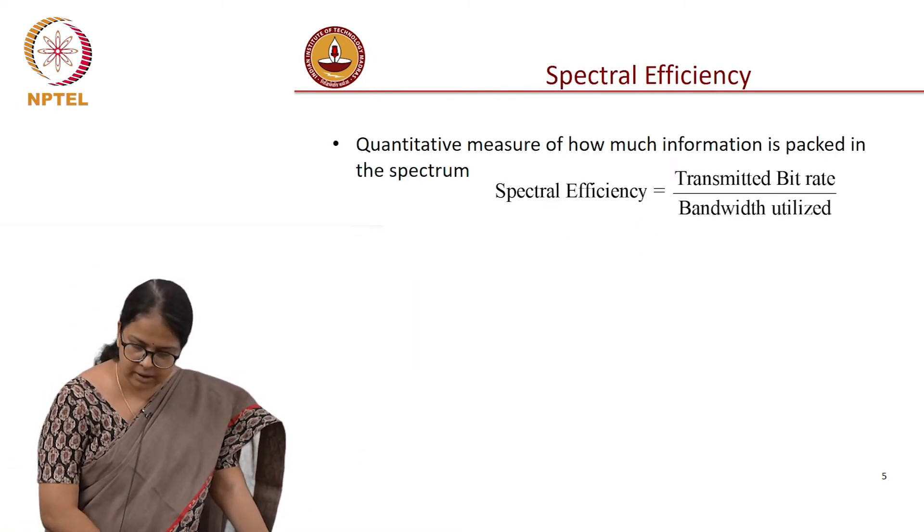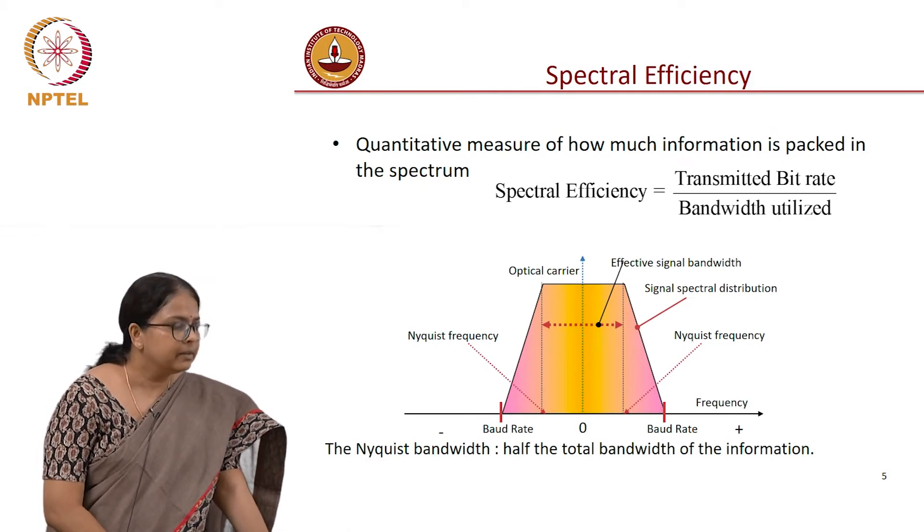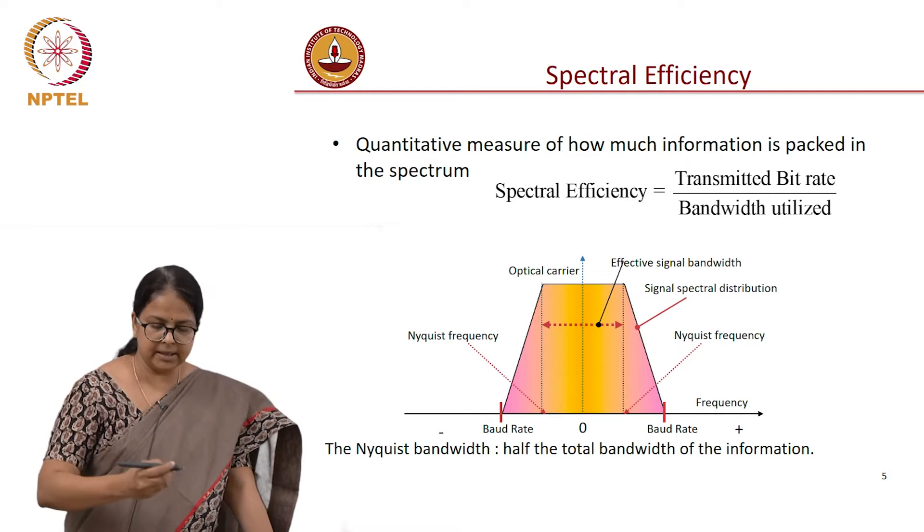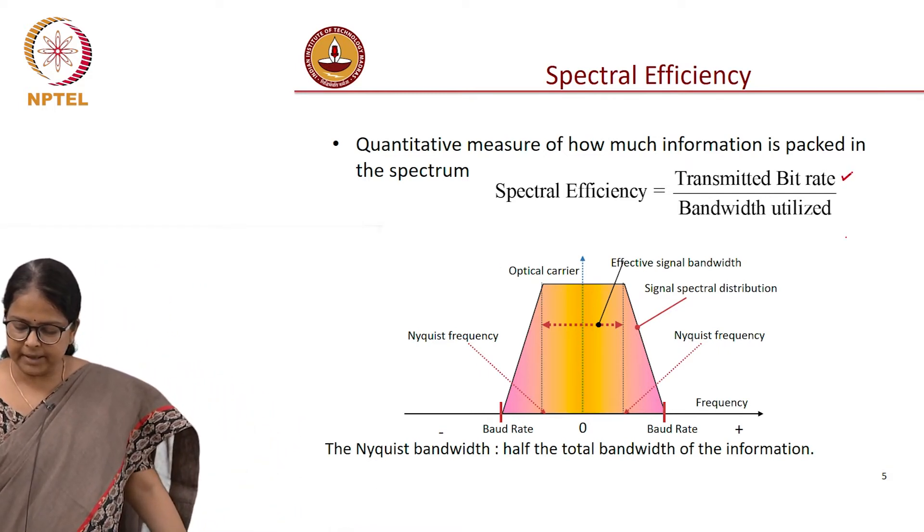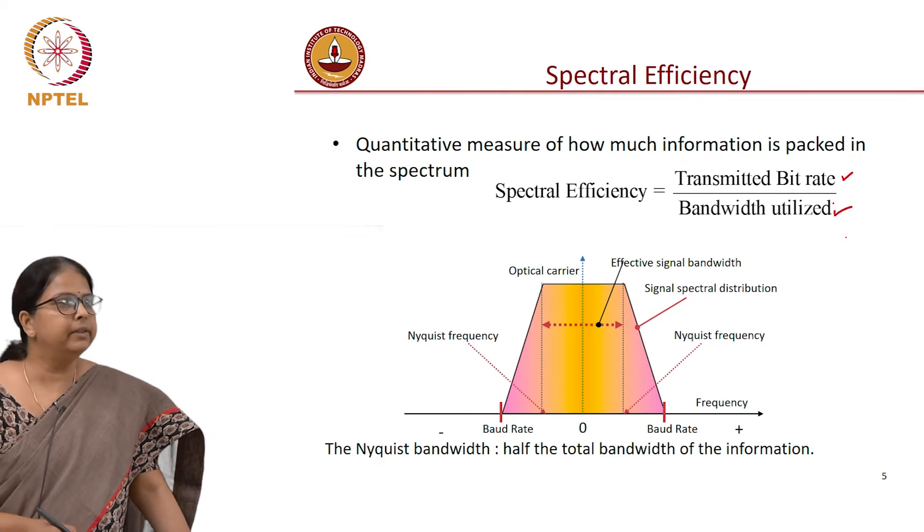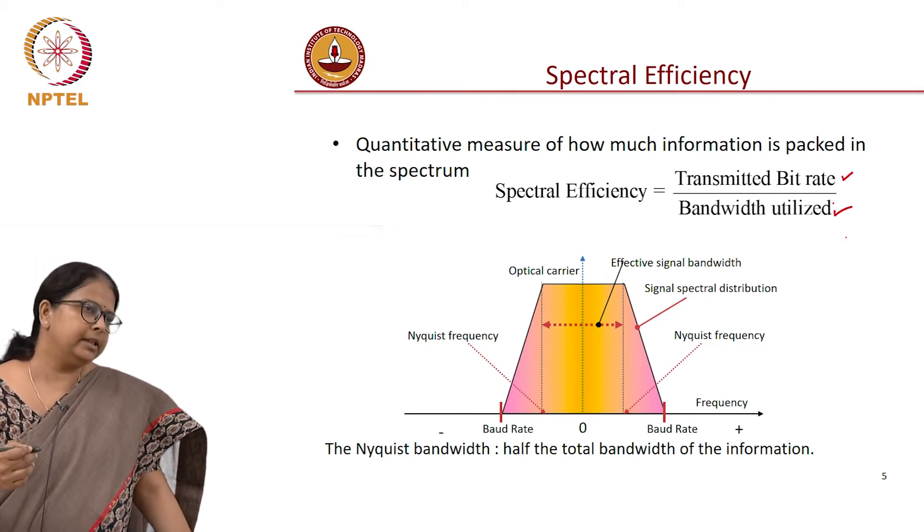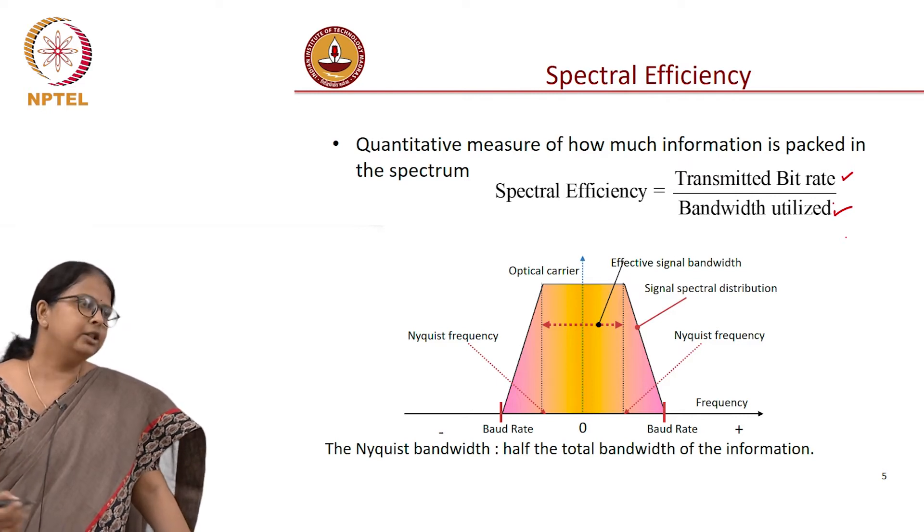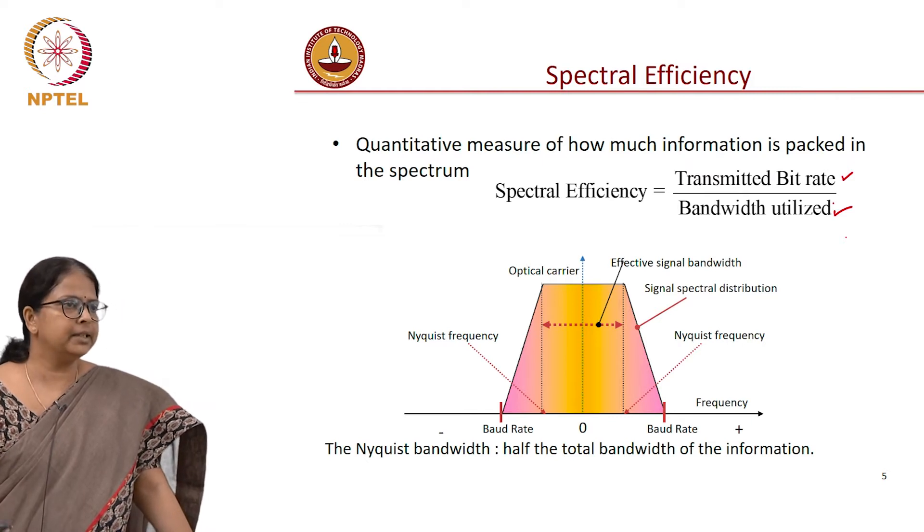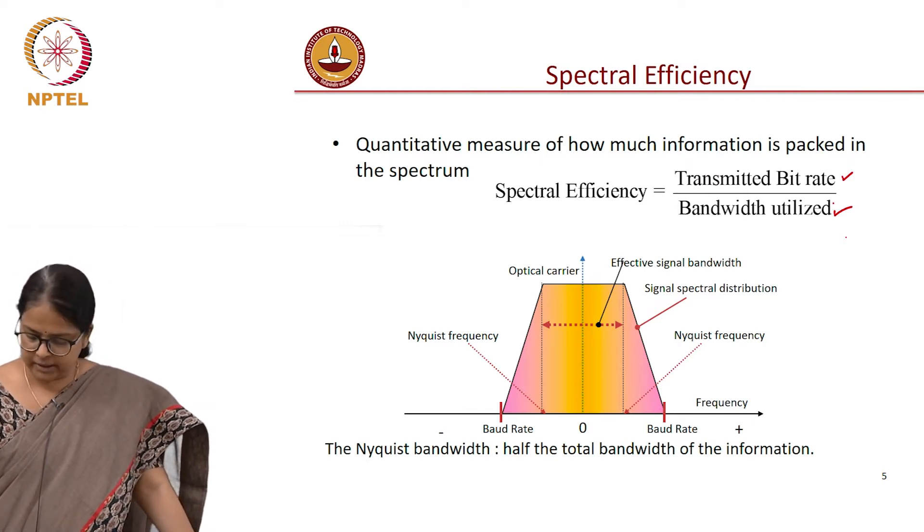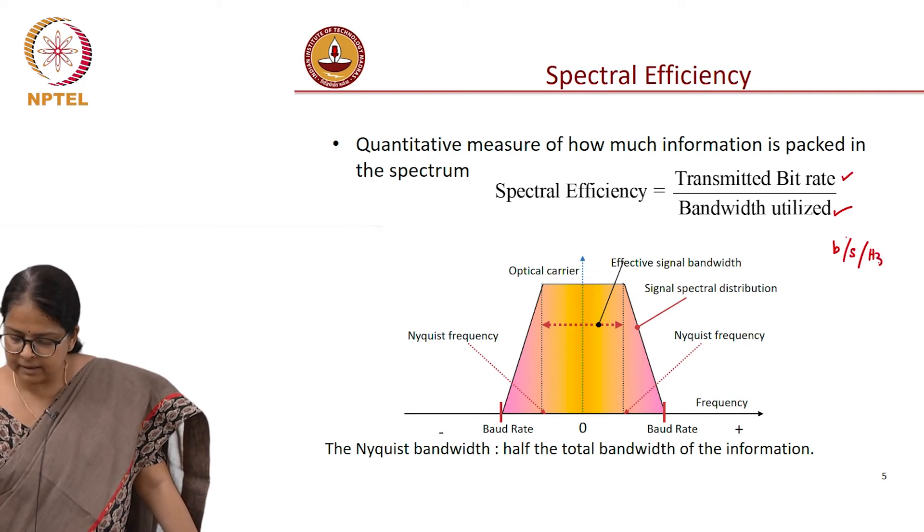But before we go on, just a quick recap on spectral efficiency. We said spectral efficiency is defined as the bit rate transmitted divided by the bandwidth utilized. If I am transmitting 10 gigabits per second in 20 gigahertz bandwidth, the spectral efficiency is half and its unit is bits per second per hertz.